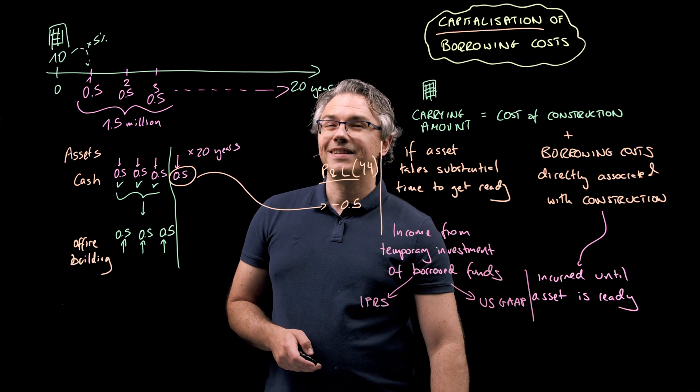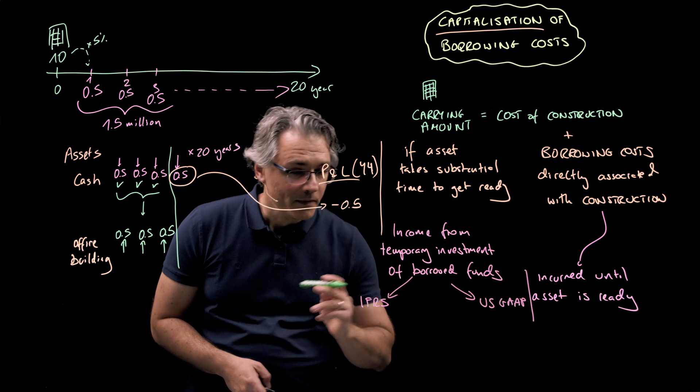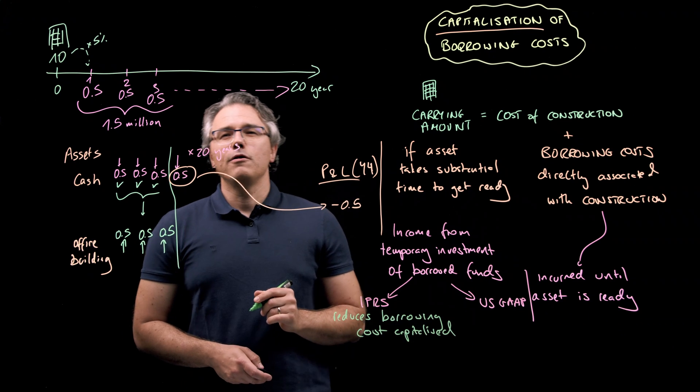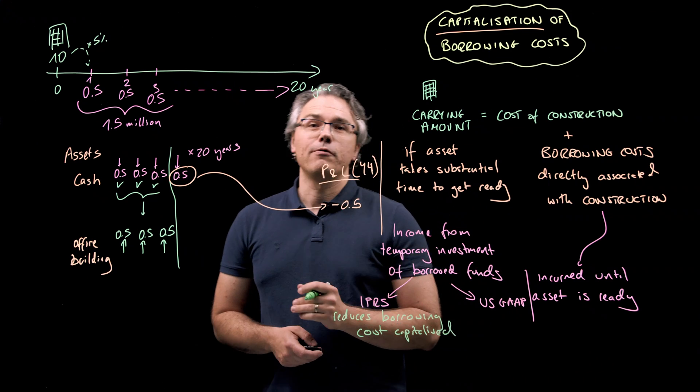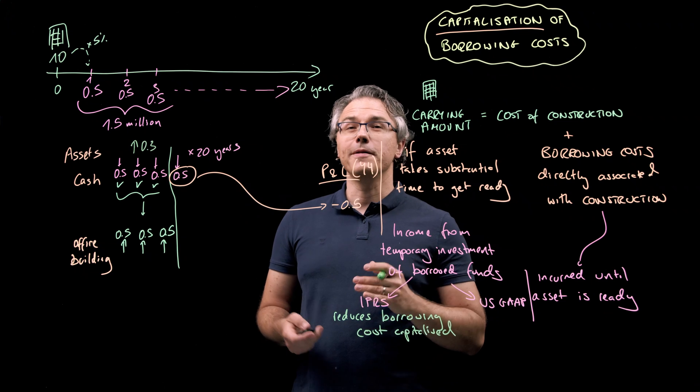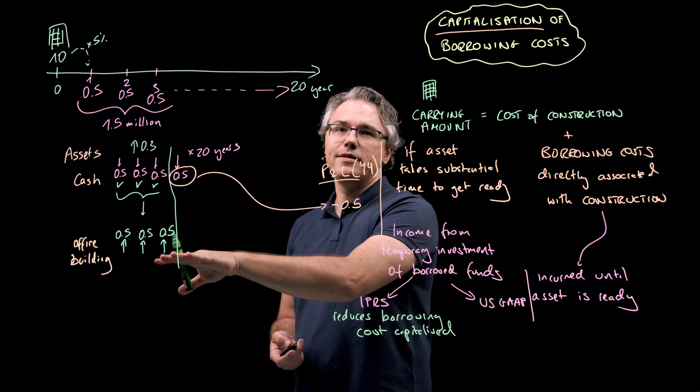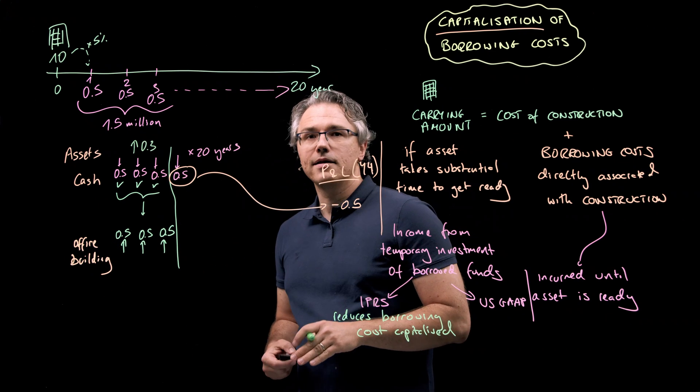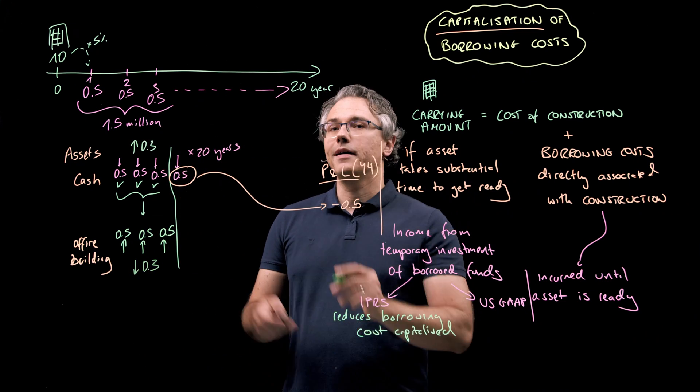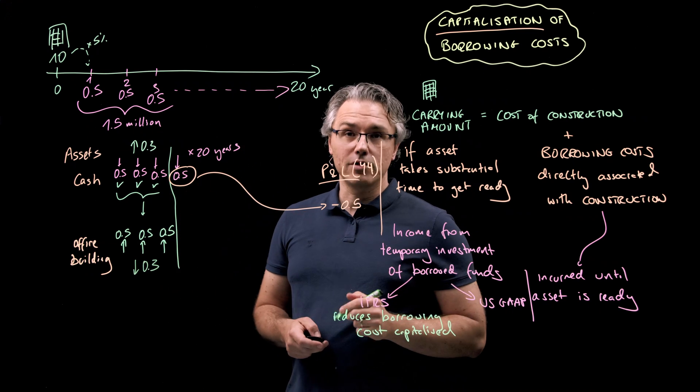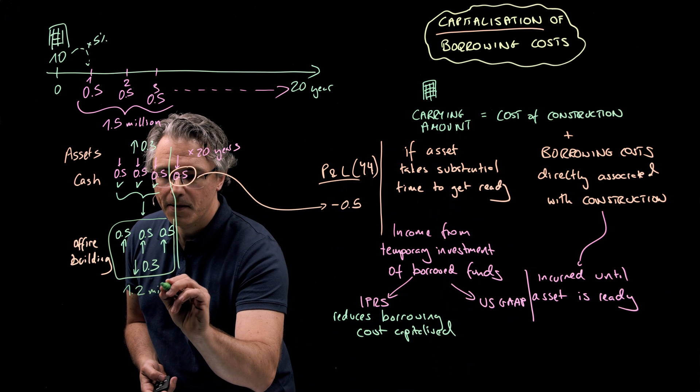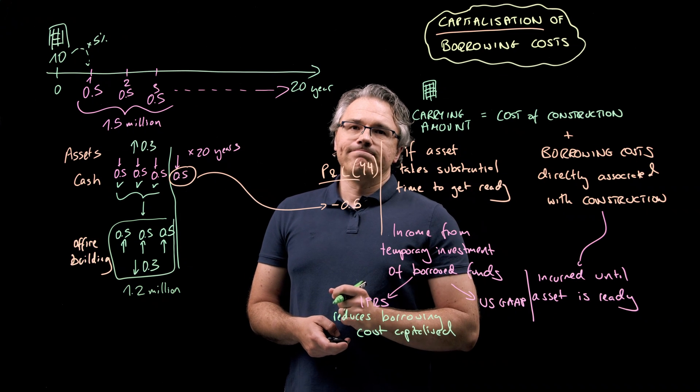Okay. Under IFRS, this income reduces the borrowing costs capitalized. So the 0.3 million, which we may assume the company generates as a cash inflow somewhere over here. So a positive upward pointing arrow of 0.3 would partially offset the borrowing costs already included in the cost of the office building. So we're going to have a downward pointing arrow of 0.3 million, an offsetting arrow relative to the previous positive ones of 0.5 each. Now, this produces an overall net amount of 1.2 million in overall costs capitalized.